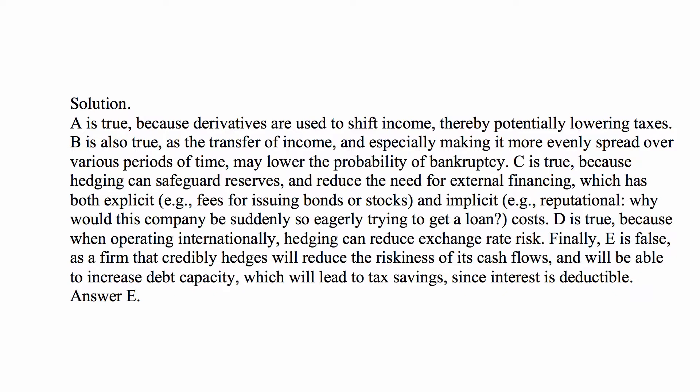So tax is the magic word here. B is also true, as the transfer of income — and especially making it more evenly spread over various periods of time — may lower the probability of bankruptcy. And you see the magic word: bankruptcy.